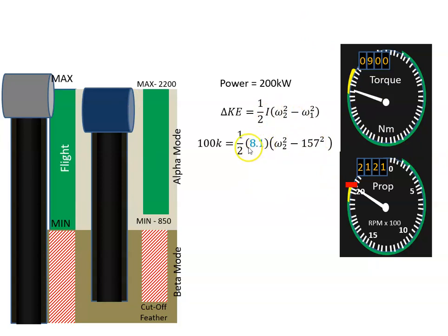Solving this equation we get that the final rotational velocity is 222 radians per second, which is 2121 revs per minute.